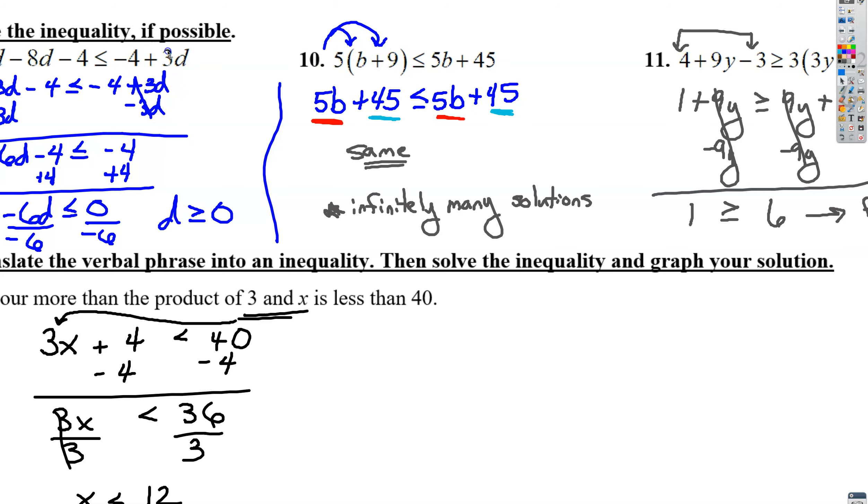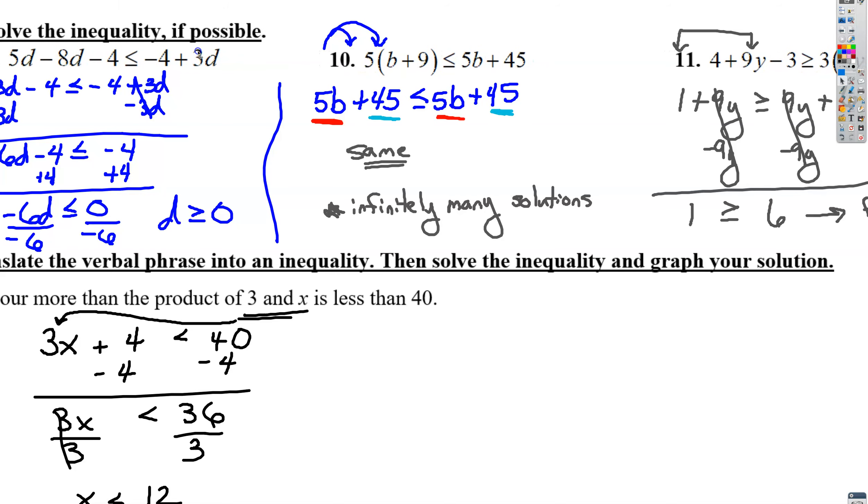This is 5d minus 8d, so the first thing you can do is combine like terms. 5d minus 8d is negative 3d. Then it looks like they wanted to move the d's to the same side, so they subtracted 3d from both sides. We're left with negative 6d minus 4 is less than or equal to negative 4. Add 4 to both sides.